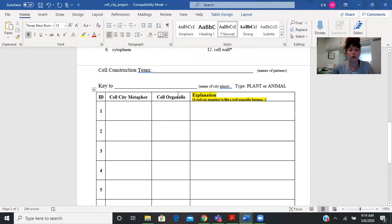So let's give you an example. We said earlier that the cell membrane is like the city limits, so we're going to say the organelle is the cell membrane and our metaphor is allows things in and out, so this would be like a gate.